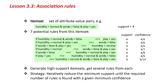What A Priori does is generate high support item sets, and then given an item set, it gets all of the rules from it and just takes those with more than a minimum specified degree of confidence. The strategy is to iteratively reduce the minimum support until the required number of rules is found with a given minimum confidence.